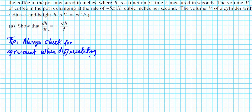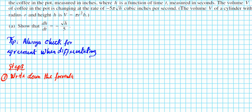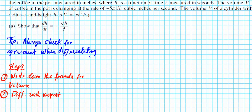Before we show that dh/dt is equal to negative √h over 5, let's go over the steps. Number one: write down the formula. There are different equations here, so it's very important that you identify the correct piece you are trying to differentiate to achieve this equation. Write down the formula for volume. Number two: we're then going to differentiate with respect to time. How do we know we're differentiating with respect to time? You look at what goes next to the d in the denominator — that is what you're differentiating with respect to.